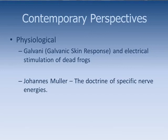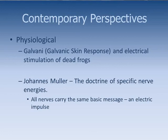Johannes Müller was a forceful advocate of the application of experimental techniques of physiology. In his Doctrine of Specific Nerve Energies, Müller observed that although all nerves carry the same basic message — an electrical impulse — we perceive the messages of different nerves in different ways. For example, if we stimulate an optical nerve, we would stimulate vision.